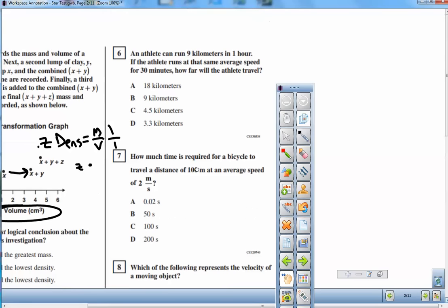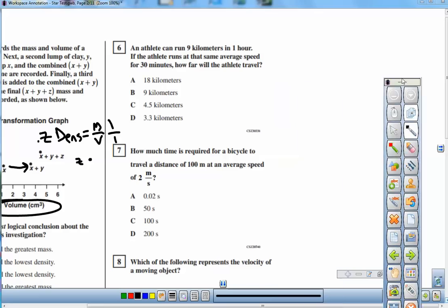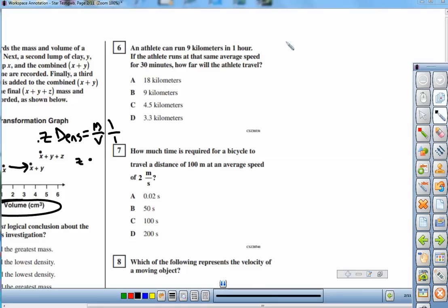Let's move on to number 6 here. An athlete can run 9 kilometers in one hour, and if the athlete runs at that same average speed for 30 minutes, how far does he or she travel? Well, to find the distance that somebody goes, you could use this equation, distance equals rate times time.